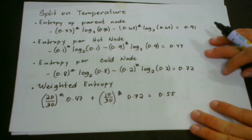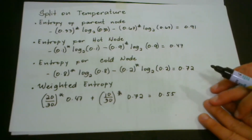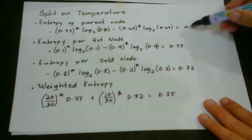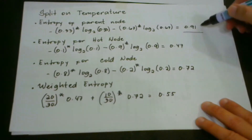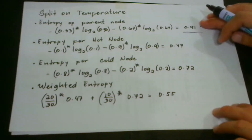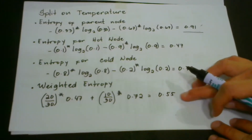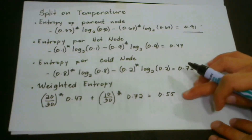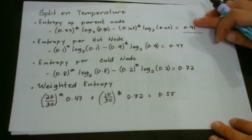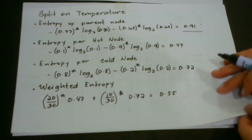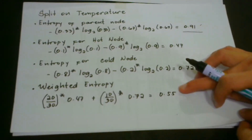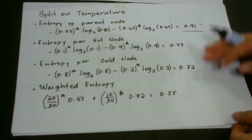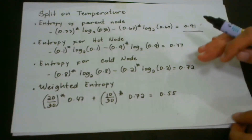The reason we get the entropy of the parent node is that we need to make comparisons between the parent node and the weighted entropy. When the entropy of our child nodes is lower than the entropy of our parent node, we can say that we have a purer node than our parent node. When it is the other way around, the child node is impure and we should not go any further.